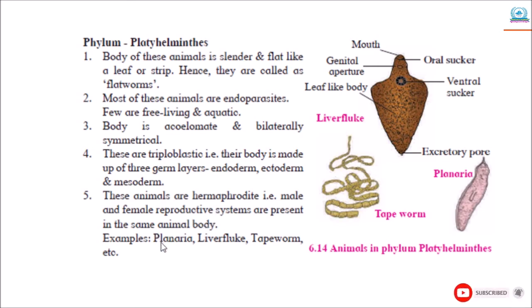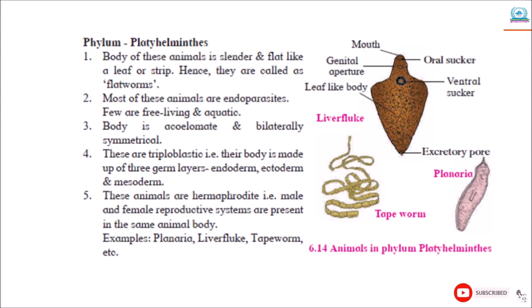Hermaphrodites means the male and female reproductive systems are present in the same animal body. For example, Planaria, liver fluke, tapeworm, etc. The animal diagram is also shown here.